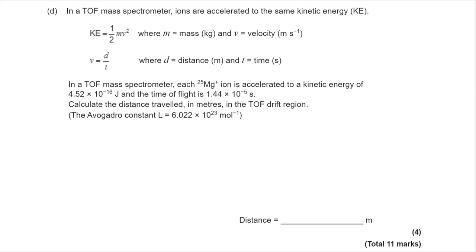So first of all, we need to know what the mass of an atom of magnesium 25 plus is. And you can see here I've done mass divided by Avogadro's. However, that would give me the mass in grams and we need the mass in kilograms. So I'm going to divide that 25 by 1000.